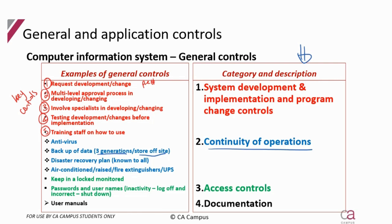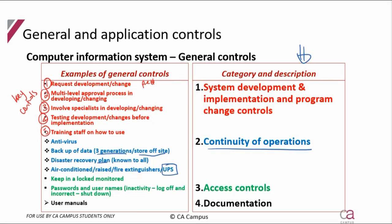Additional general controls include a disaster recovery plan — the business needs a plan to recover in the event of a disaster, and that plan must be known to all staff so they know their role. Standard physical computer controls are also important: keep computers in an air-conditioned environment, raise them off the floor in case of a flood, have fire extinguishers available, and have an uninterrupted power supply for load shedding so the computer can still operate, allowing you to save and back up before shutting down.